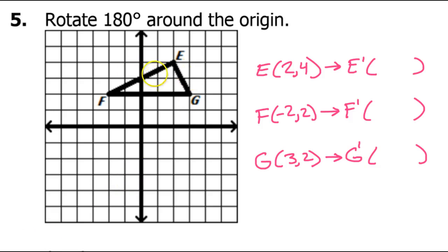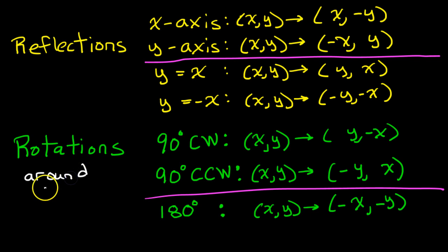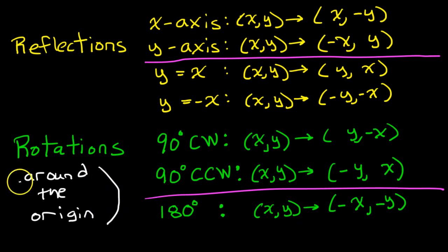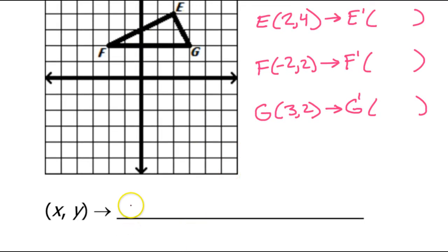For number 5, we are going to rotate this image 180 degrees around the origin. All three rotation rules only apply if we are rotating around the origin — we can only use these rules if the center of rotation is 0, 0. For 180 degrees, the rule is opposite of x, opposite of y.